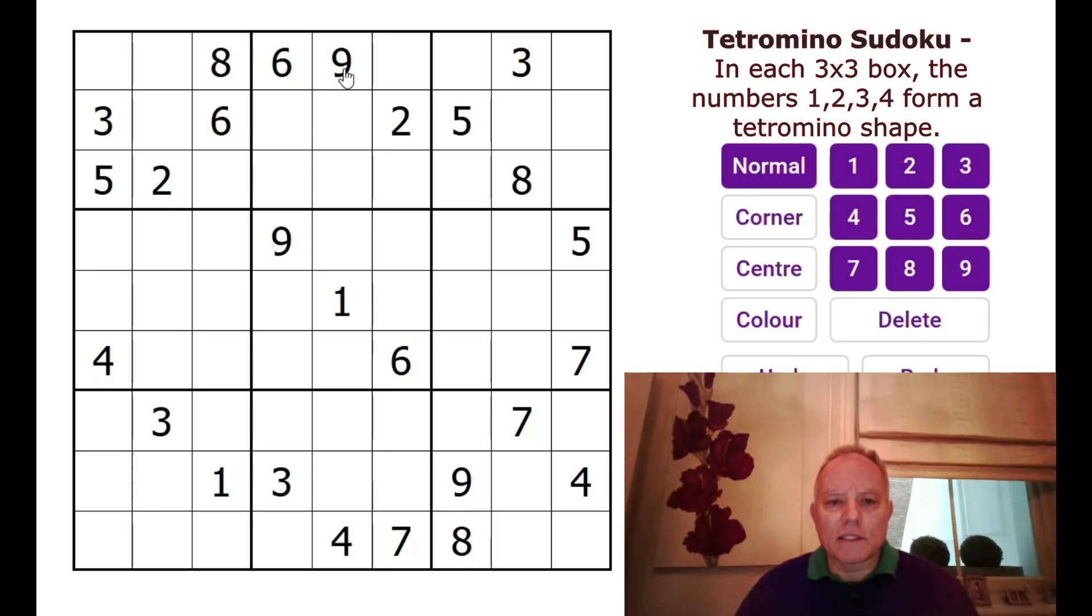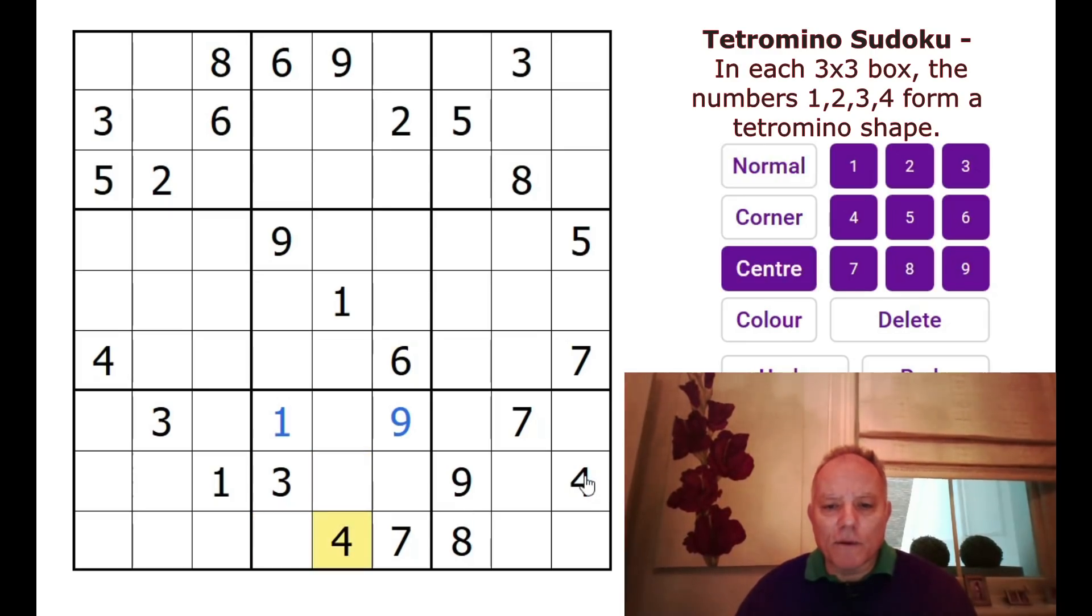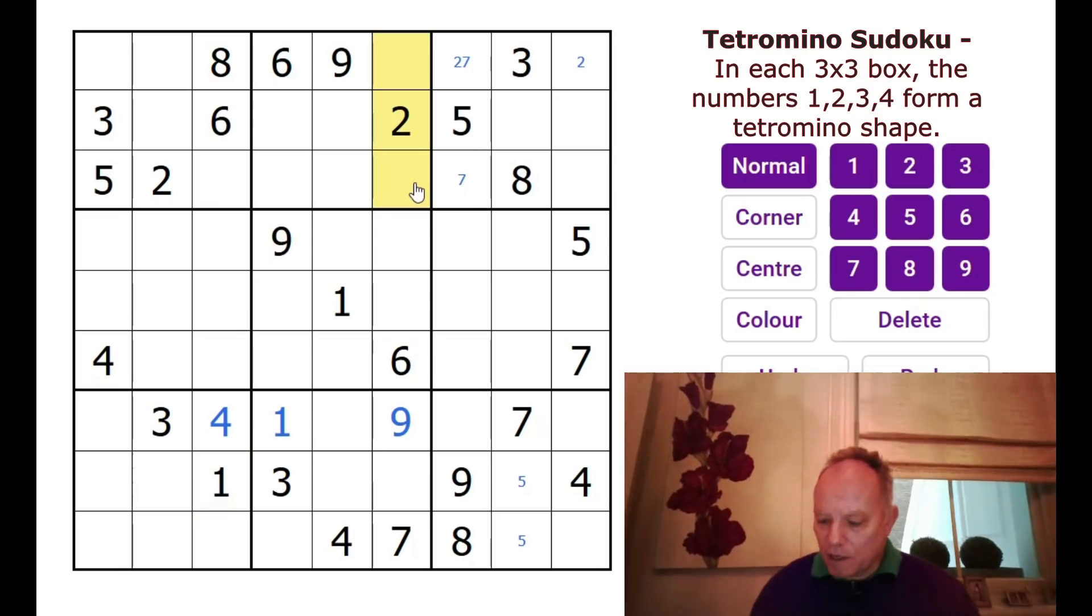There's quite a lot of givens. We've got nines there and there. So the nine down there must be in the corner. That works very well in this box with the ones. From the constraint, the two has to be in one of those, but that doesn't decide it yet. Fours we can do, keep doing ordinary Sudoku, certainly for a while. Fives there and there. Let's fill in a few of the pencil marks.